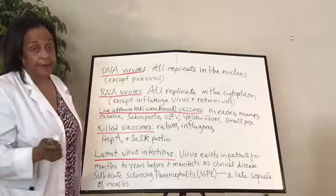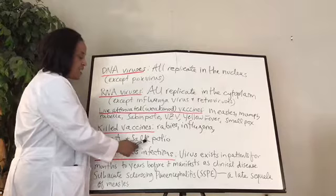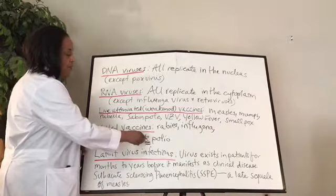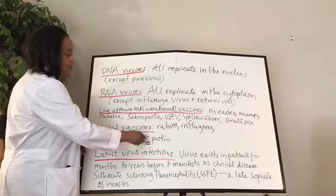Killed virus vaccines include: rabies — you definitely don't want even a weakened rabies vaccine given how nearly 100% fatal it is — influenza vaccine, Hepatitis A vaccine, and the Salk polio vaccine. A memory trick: Salk starts with 'k' in the spelling, and it's the killed one. The Sabin polio vaccine is the live weakened one.